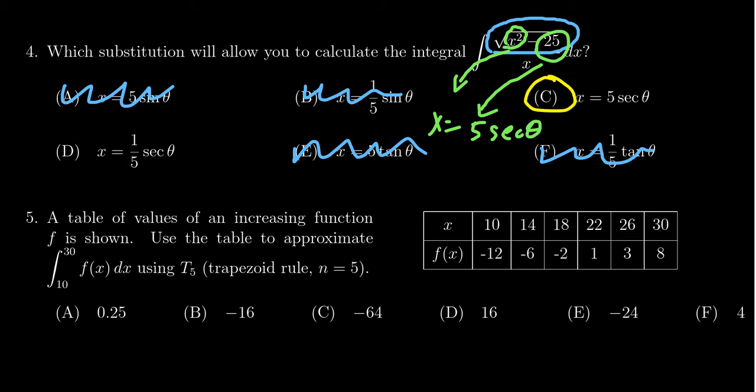What variation would have given us choice D as the answer? We could have seen instead the integral of √(25x² - 1)/x dx.